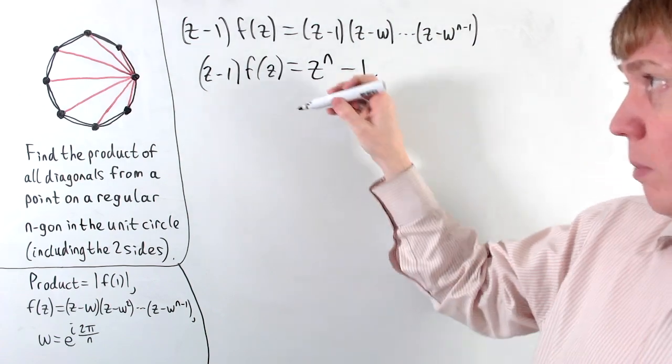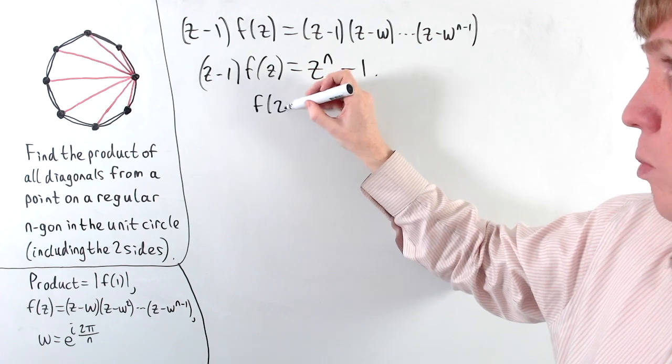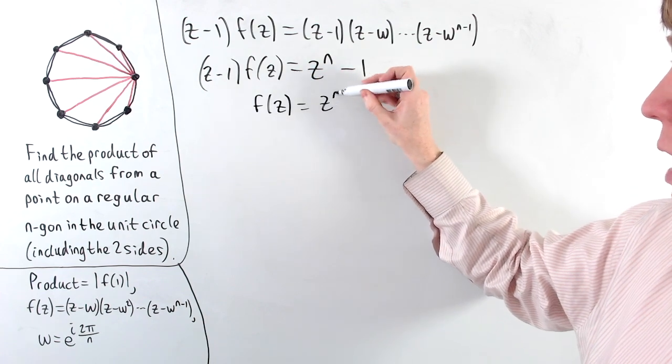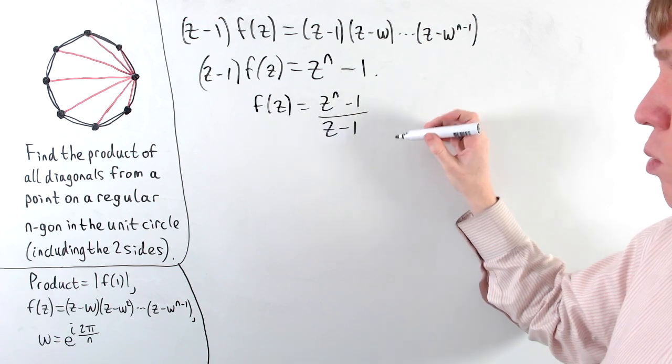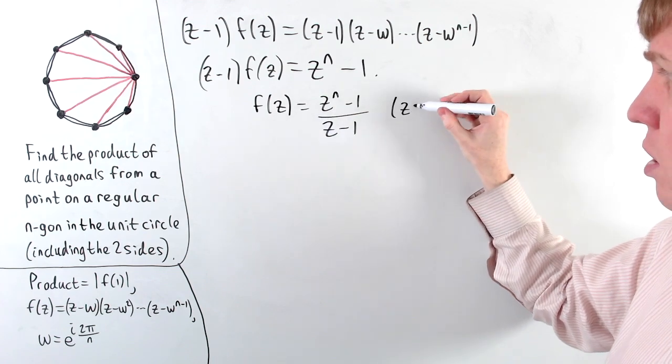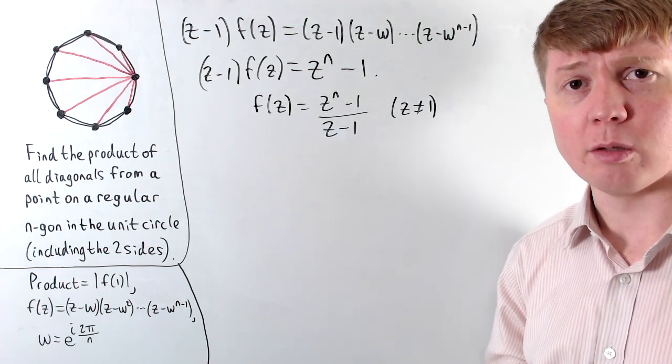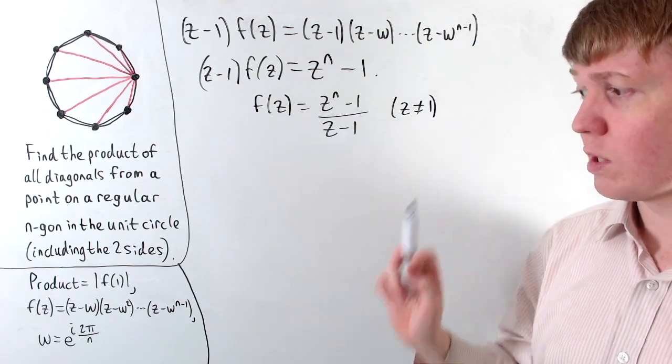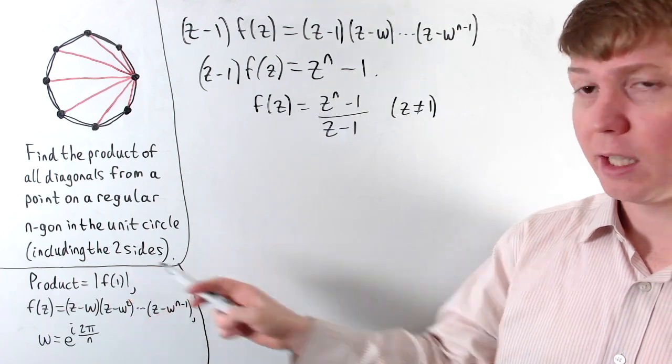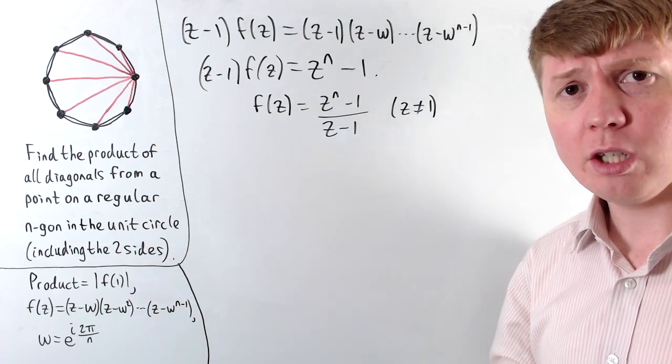And now we can divide by z minus 1 to get a nice expression for f of z. So we get z to the n minus 1 over z minus 1. And this is valid, this division at least, when z is not equal to 1, which is actually quite unfortunate, because this is exactly the value of z that we're interested in. So we want to find the modulus of f of 1. But nonetheless, even when z isn't equal to 1, we can simplify this expression.